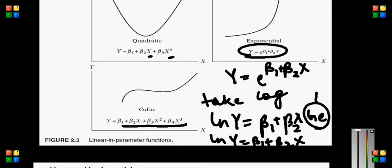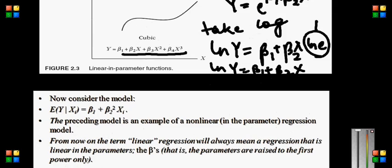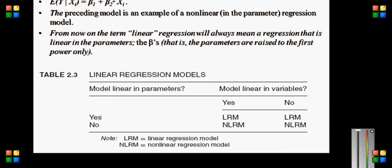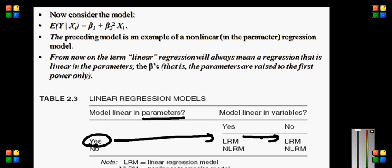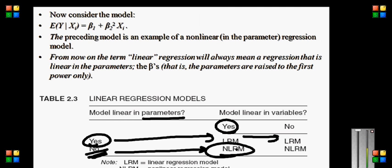For us, if something is linear in parameter, then it is linear — because I am only concerned with parameter. If something is linear in variable but not linear in parameter, then for me it is not linear, because I will consider something to be linear only in terms of parameters.